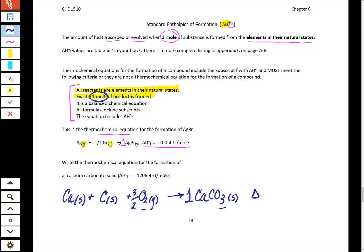And then we have to put in our delta H. In this case, the delta H is given to you. In other cases, you might have to look it up or calculate it. This is what a thermochemical equation of formation looks like.